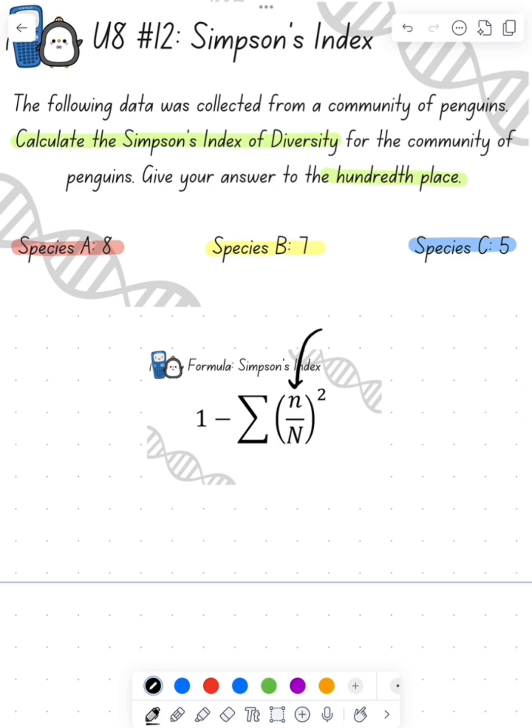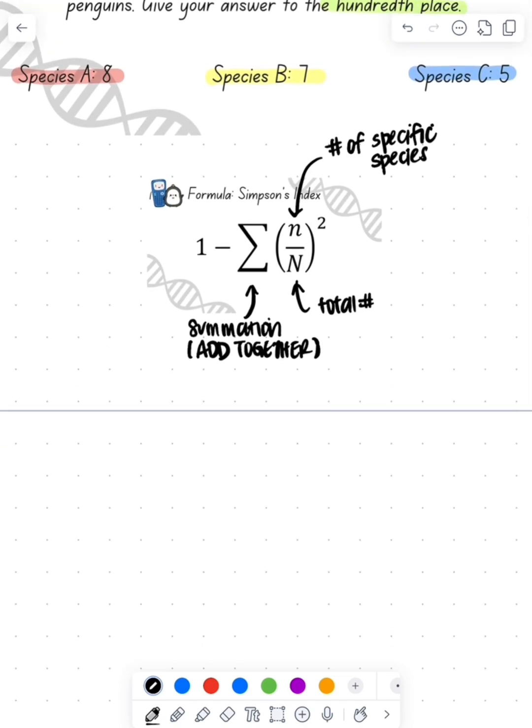So what's the equation? We see that we have 1 minus the summation of a little n, where a little n is the specific number of a certain species, so species A has 8 for example, over the total population, so 8 plus 7 plus 5, and we're going to square each of those values and add them together. That's what that little sigma symbol is, our summation.